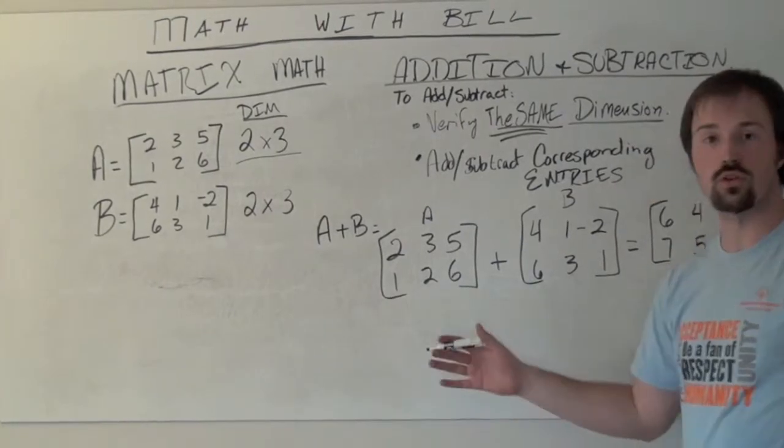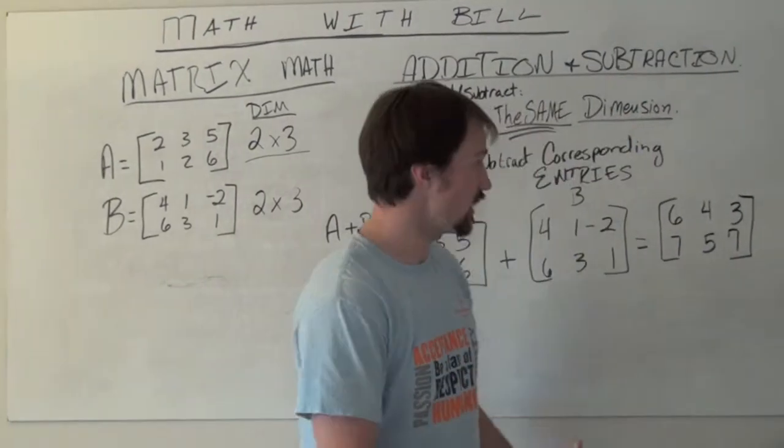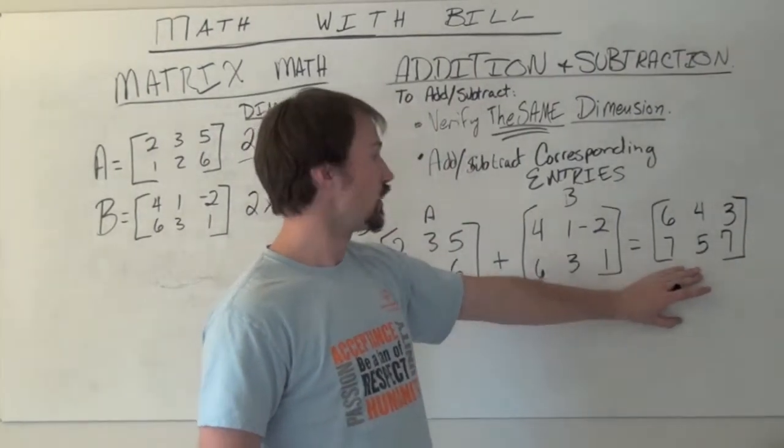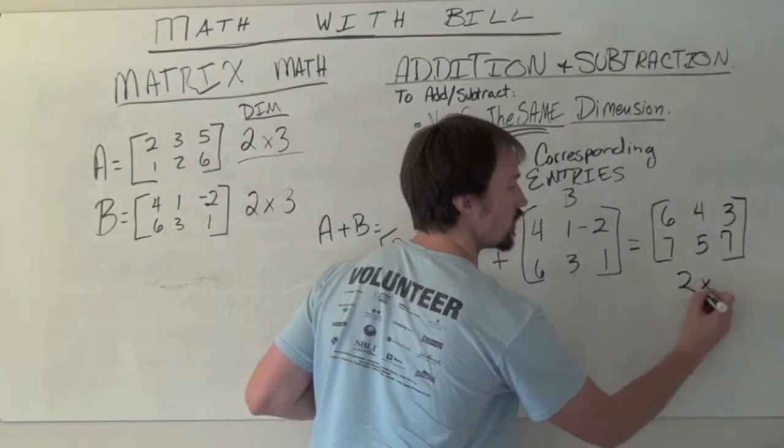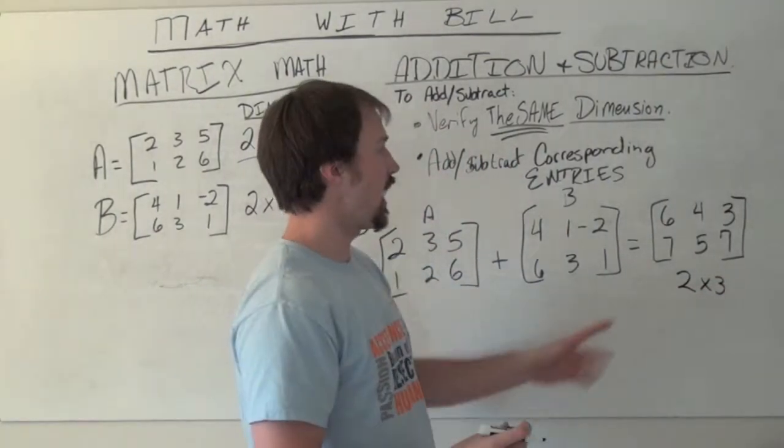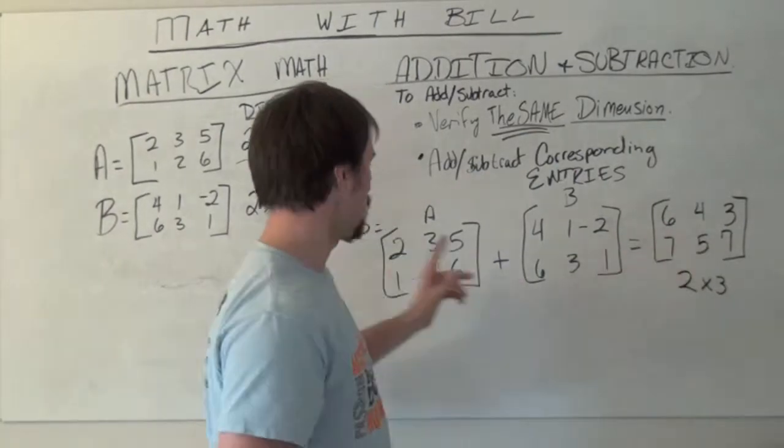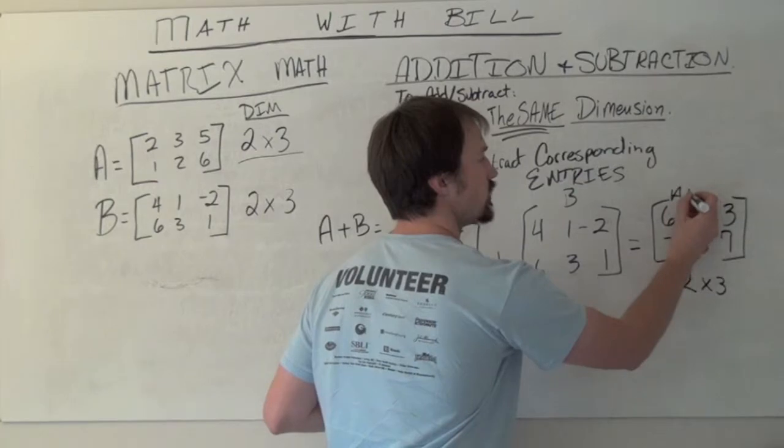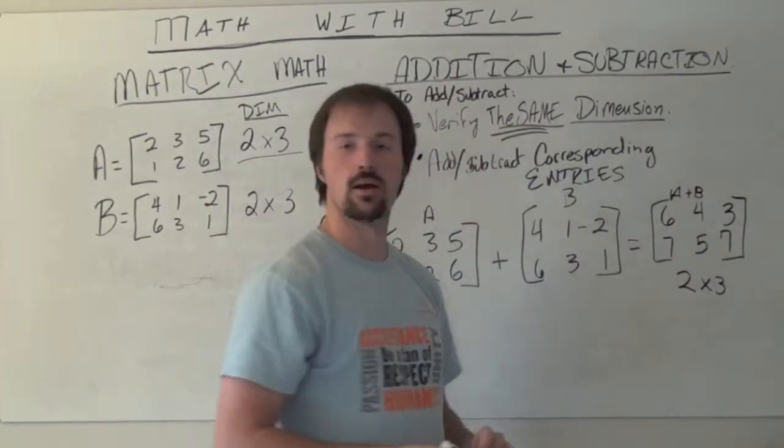In our solution matrix or sum matrix of A plus B, we end up with the same dimension, still a 2 by 3 matrix. These are all the results of adding our corresponding entries. This is the A plus B matrix.